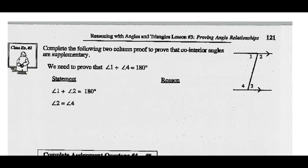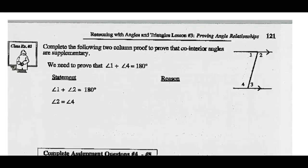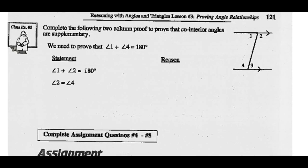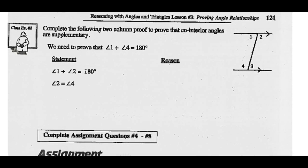Let's look at example two: complete the following two-column proof to prove that the co-interior angles are supplementary. We need to prove that angle one plus angle four adds up to 180 degrees — that's what we're trying to prove.